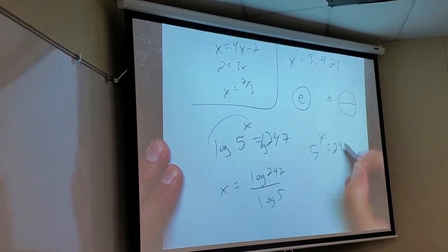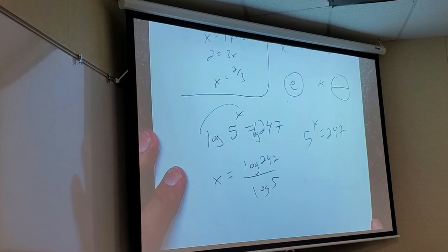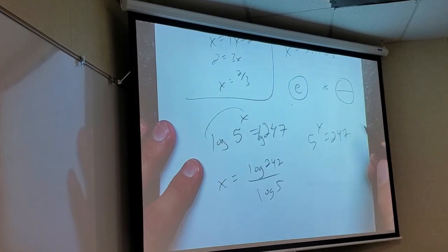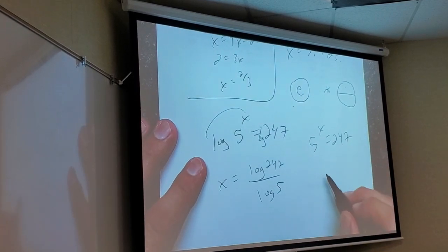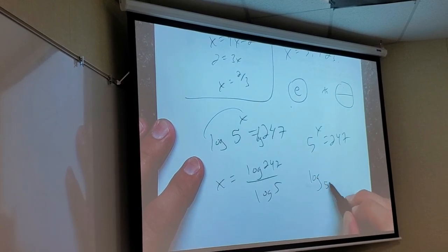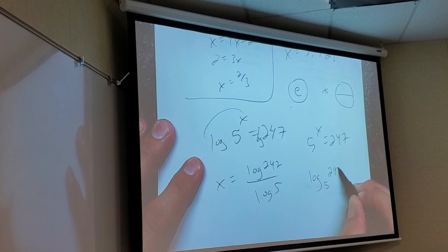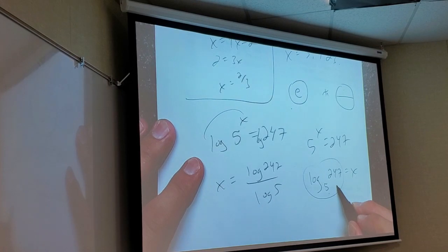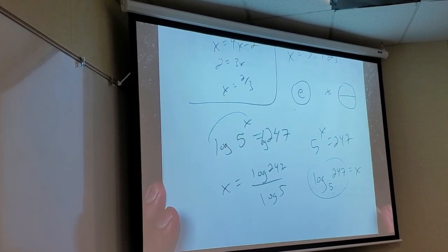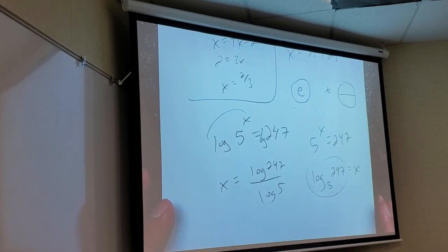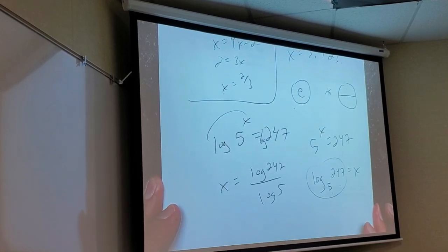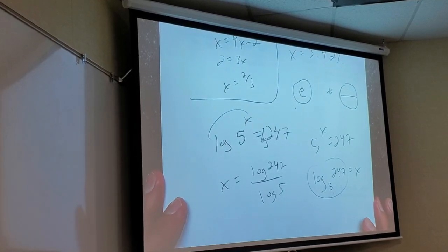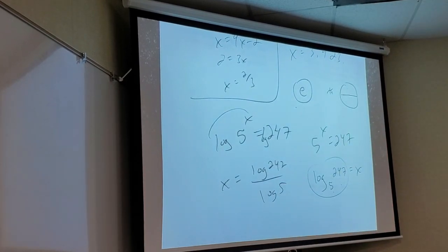Let me see if you guys get this. If I had a log base whatever I want, and this is a problem that was on the quiz, can you rewrite this in logarithmic form? What's the base? Five. What goes in here? 247 equals... If I had a log base five button, can I just put this in? But we don't. There is. I'll show you after class now.